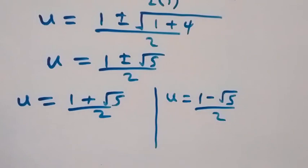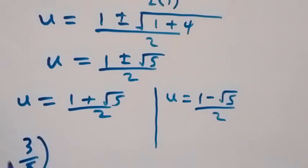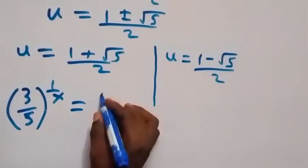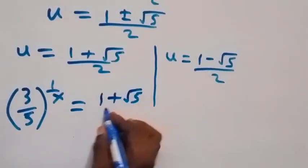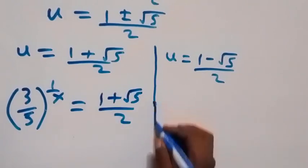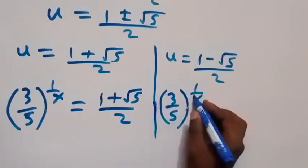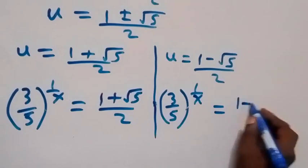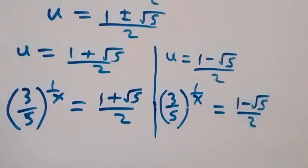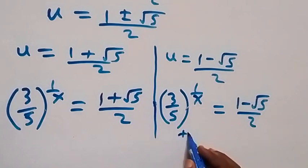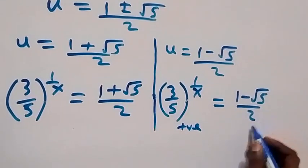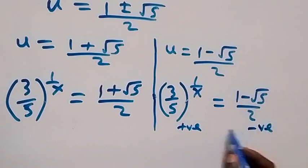Don't forget we represented u as 3 over 5 to the power of 1 over x, which equals 1 plus root 5 over 2. On the other case, 3 over 5 raised to power 1 over x equals 1 minus root 5 over 2. The first case gives us a positive number, but this second case is negative. So the second case cannot be equal to a positive base power, and we won't work further in that area.